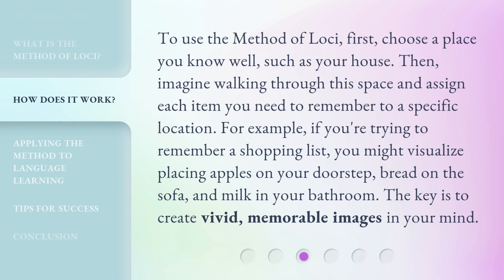To use the method of loci, first choose a place you know well, such as your house. Then, imagine walking through this space and assign each item you need to remember to a specific location. For example, if you're trying to remember a shopping list, you might visualize placing apples on your doorstep, bread on the sofa, and milk in your bathroom. The key is to create vivid, memorable images in your mind.